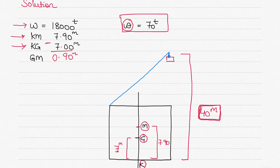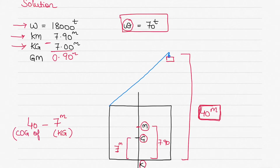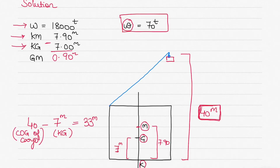When the cargo is picked up by the crane, the difference between the center of gravity of the vessel and the center of gravity of the cargo is what we need. That will be 40 meters minus 7 meters. The 7 meters is the KG of the vessel and 40 meters is the height of the crane head. So 40 minus 7 equals 33 meters - this is the vertical difference in the center of gravity.